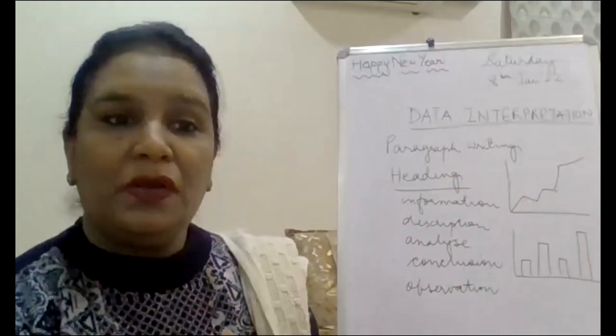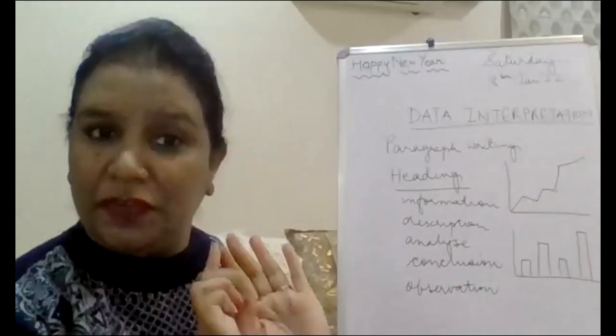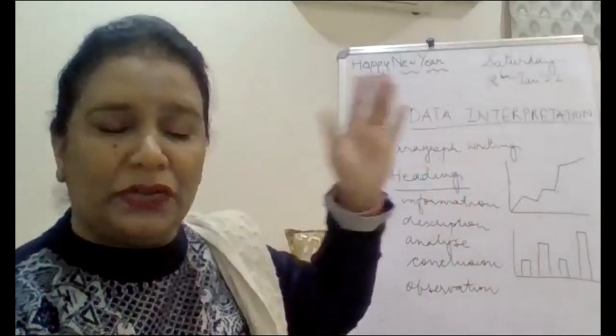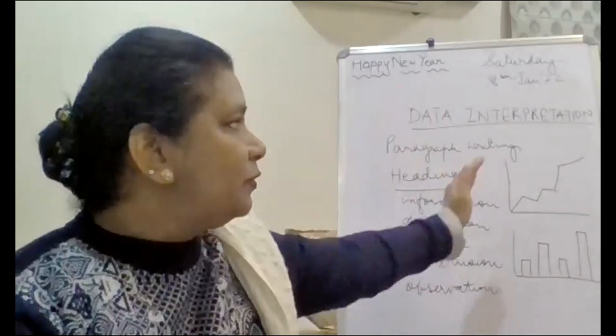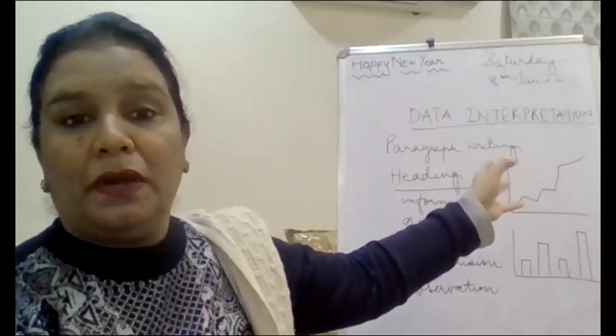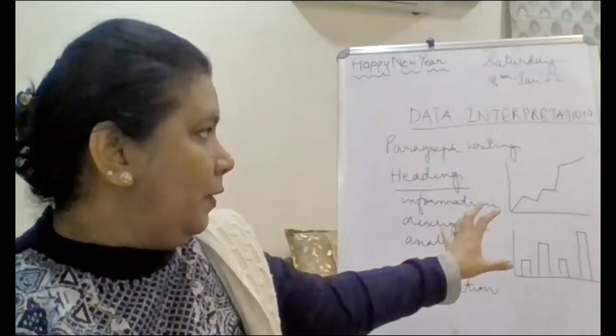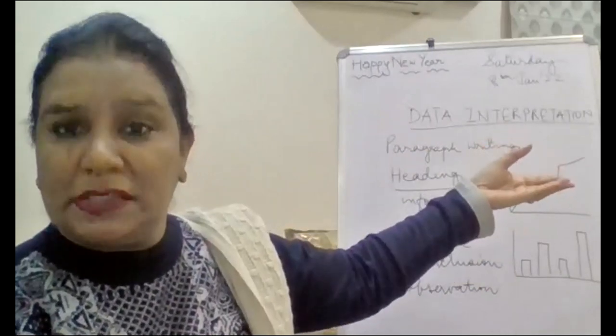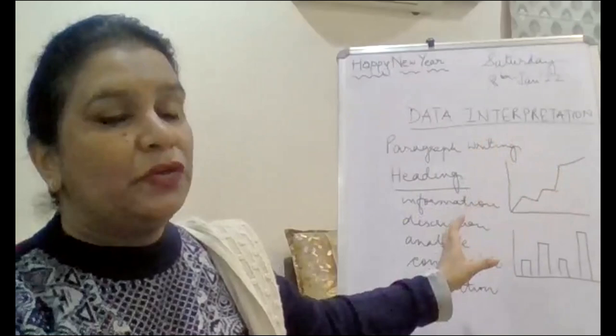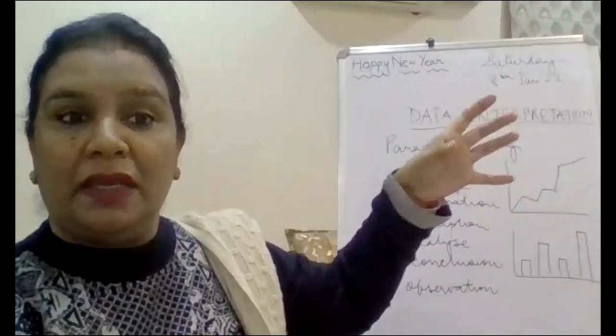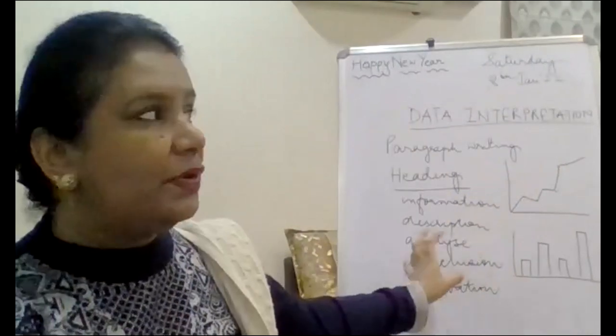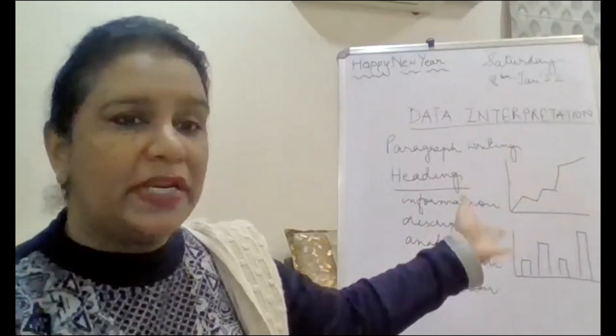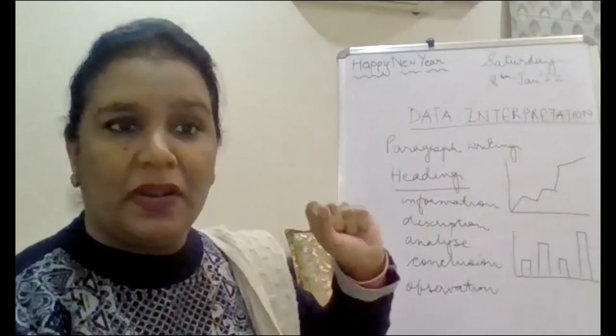Right. So, first of all, what are the things that you're going to do? You'll be given your heading. What is it? It could be simply data interpretation if you write it down. If you can't think of anything else. Or it could be, say, the COVID cases in the past months. Or it could be the increase in the road accidents or increase in the use of gadgets. Whatever the information is given.